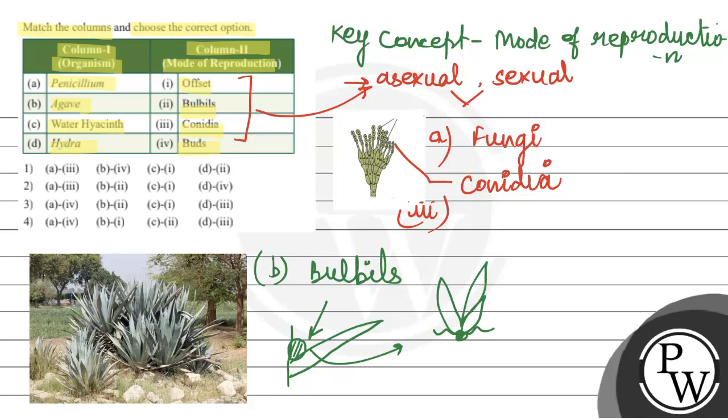So they call bulbils, bulb-like structures. When they are flowered, you can see the bulbils here too. Mostly we get them on leaf and stem. So B will match with second.